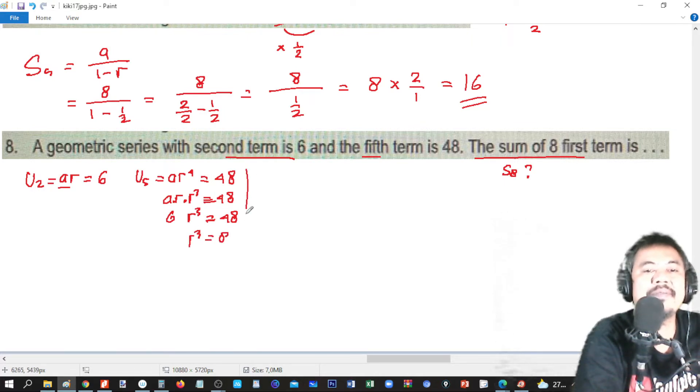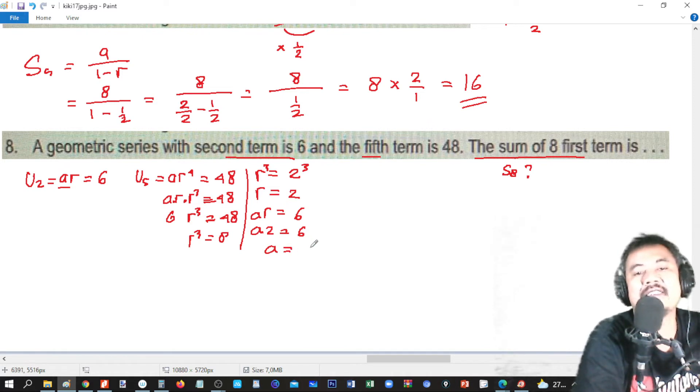Then we have R to the power 3 equals 8, so R equals 2. And AR equals 6, right? So we have R is 2, so A times 2 equals 6, and A is 3.